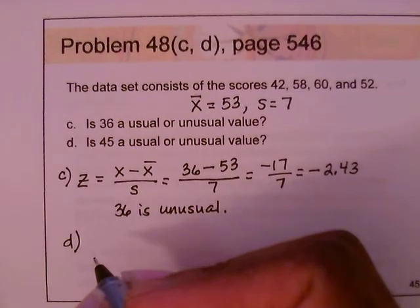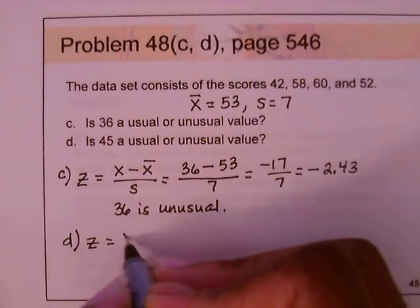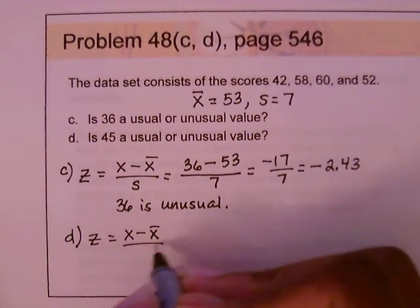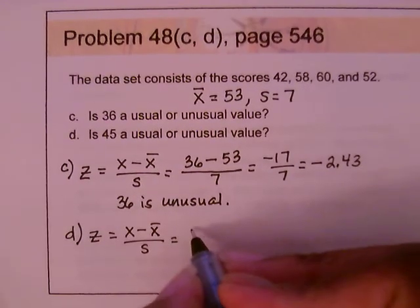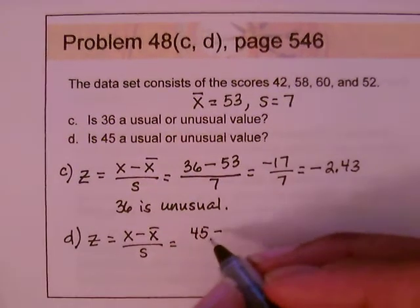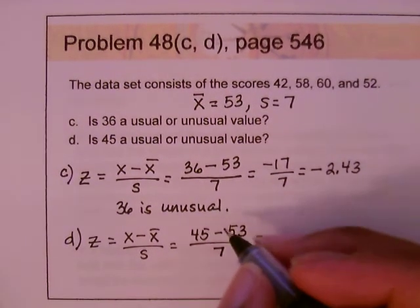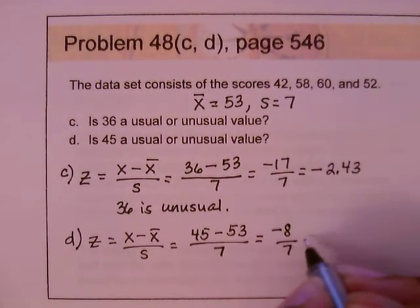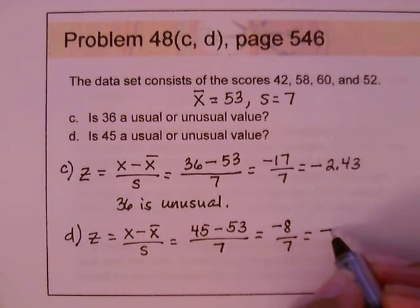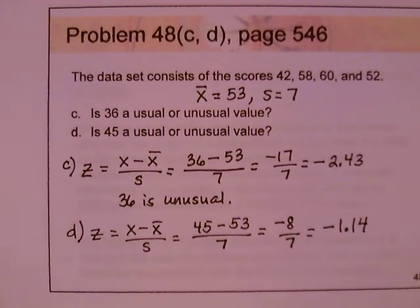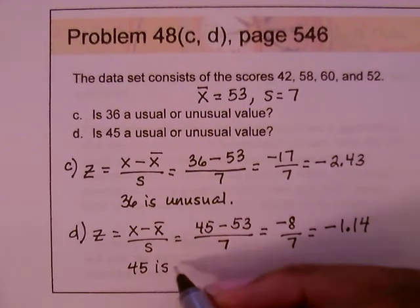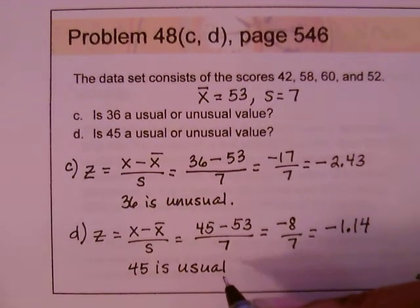For part D, is 45 a usual or unusual value? Using the same Z formula: 45 minus 53 divided by 7 equals negative 8 divided by 7, which is approximately negative 1.14. Since negative 1.14 is between negative 2 and 2, 45 falls within the range of usual numbers and is therefore a usual value.